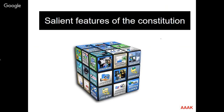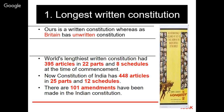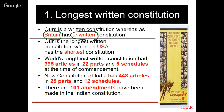Salient features of our constitution: our constitution is the longest written constitution in the world. Many countries have a written constitution. Interestingly, Britain has an unwritten constitution — they don't have a compiled written constitution like ours, yet British democracy is one of the best functioning democracies in the world. The shortest written constitution belongs to the USA.